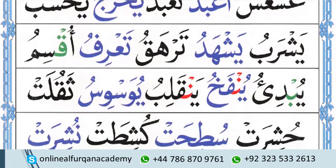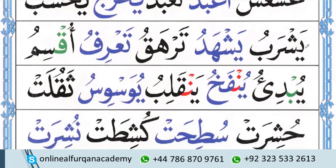We can also solve the next line. Again the first letter is YA going to connect with SHEIN. So it is YASH, RA, BU. Together: YASH, RA, BU.